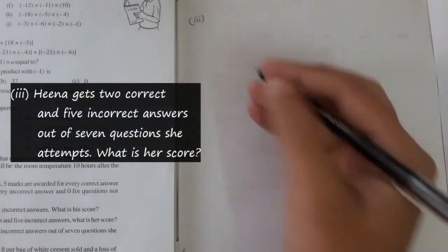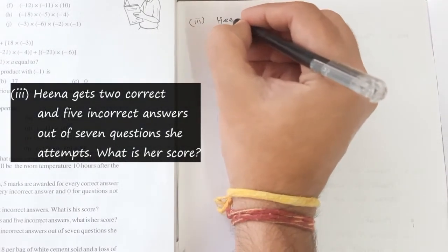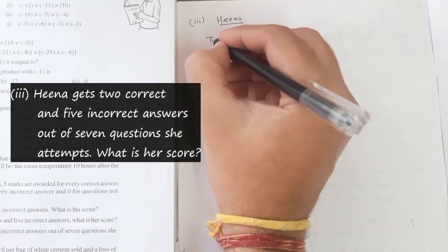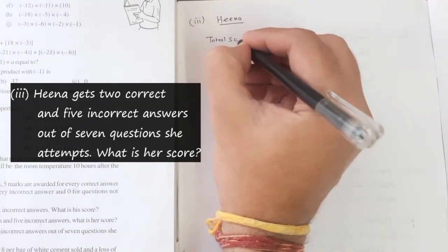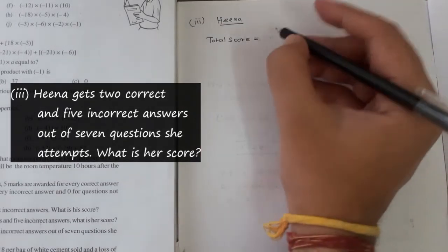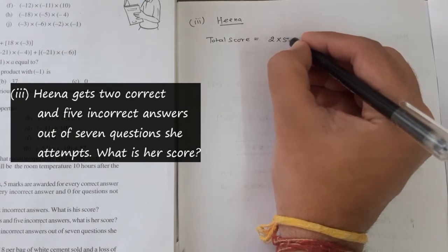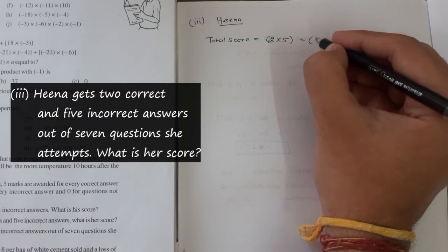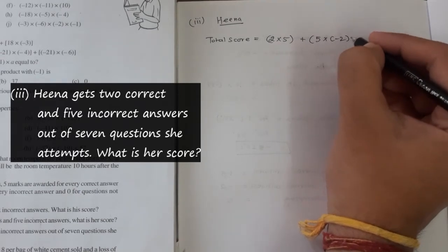So for the third part, Hina, the total score would be - she has got 2 correct, so 2 times 5, and she has got 5 incorrect, so 5 times minus 2.